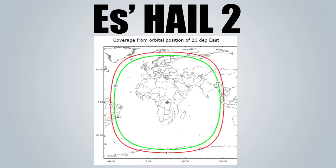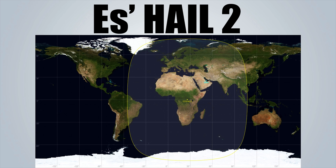Because Es'hail-2's transponders are in the microwave frequency range, receiving a signal would require some form of LNB and satellite receiving dish. The great thing is, Es'hail-2 is geostationary, so there's no need for tracking — once you align your transmitter and receiving dishes, you can leave them there.